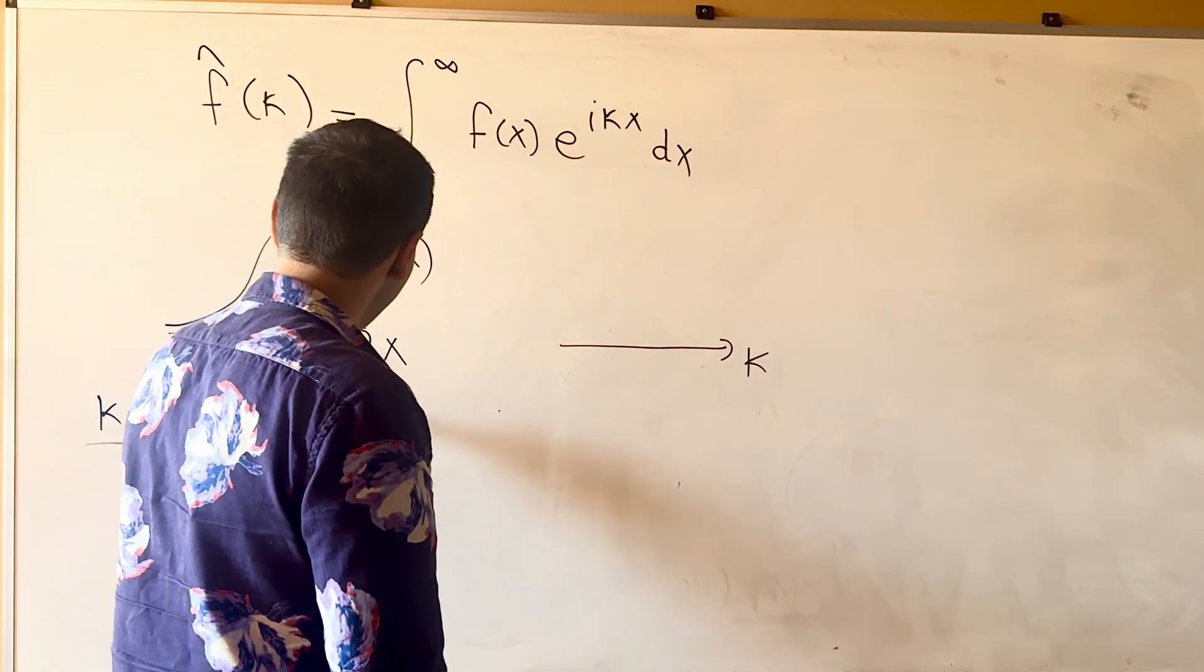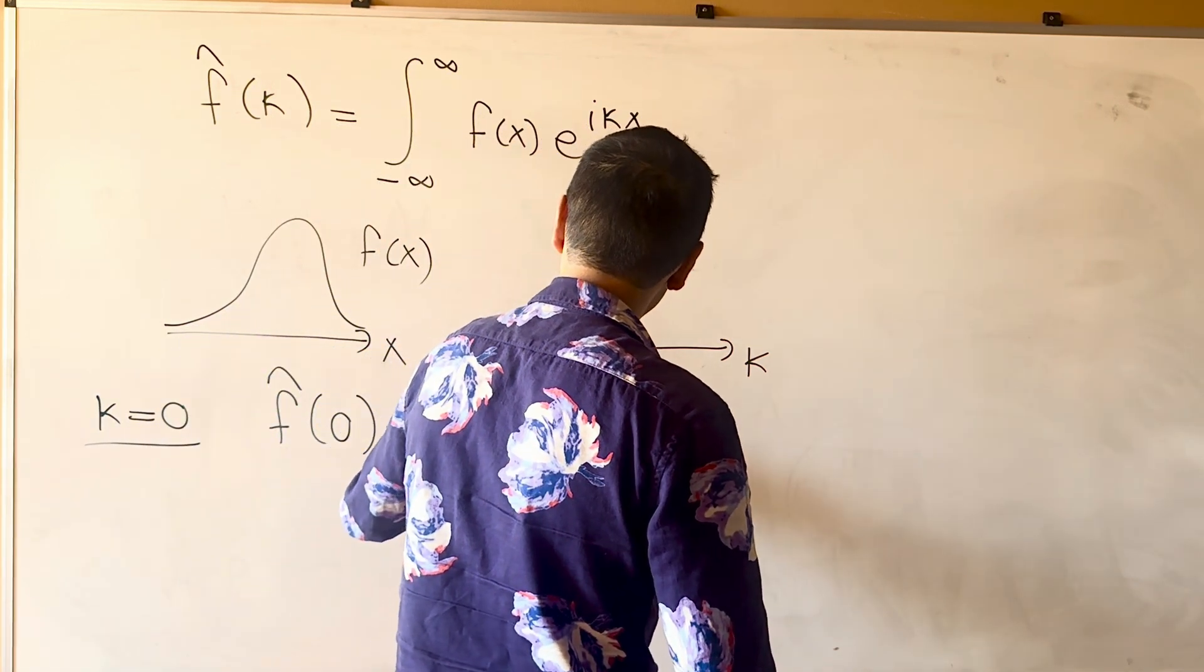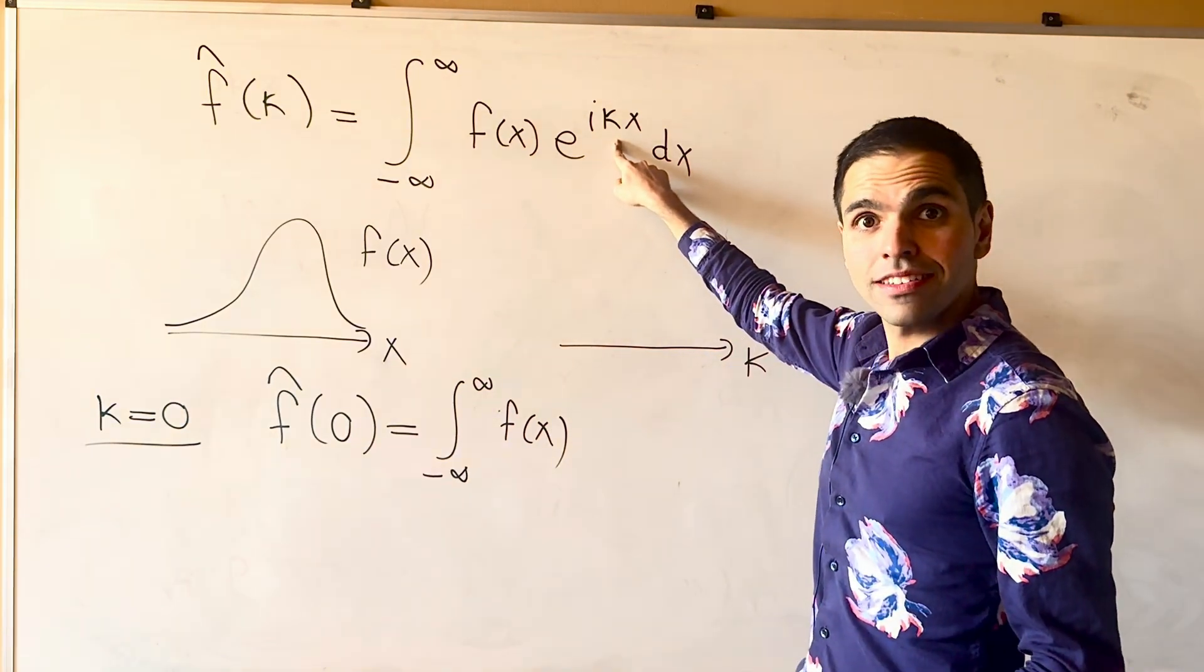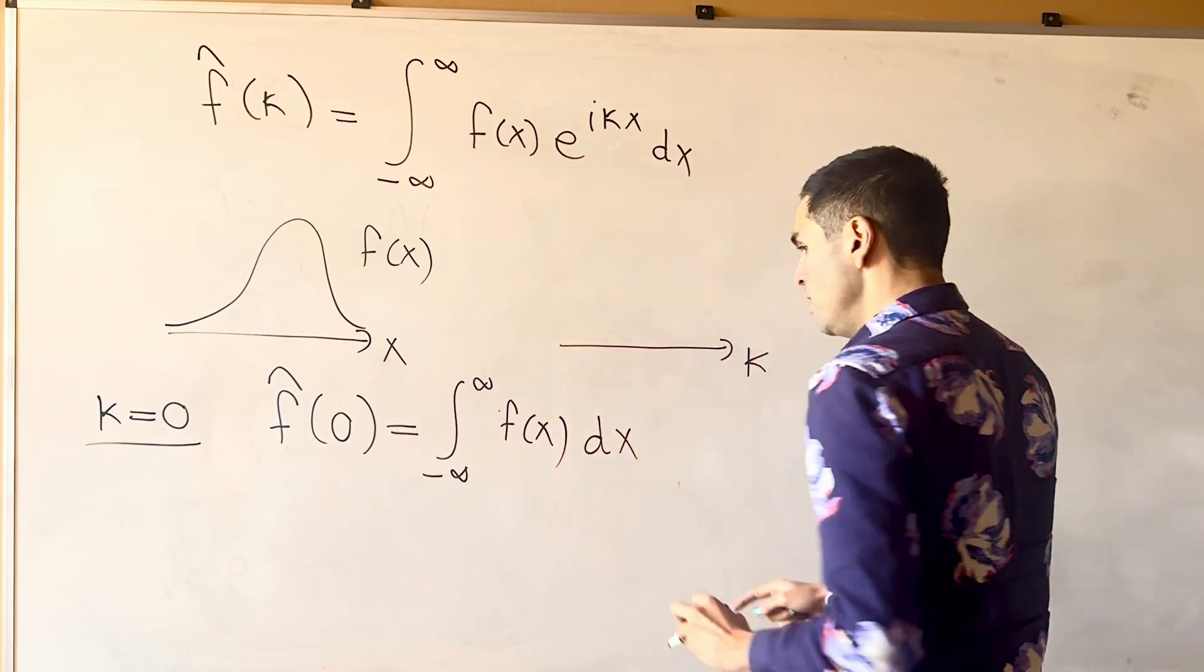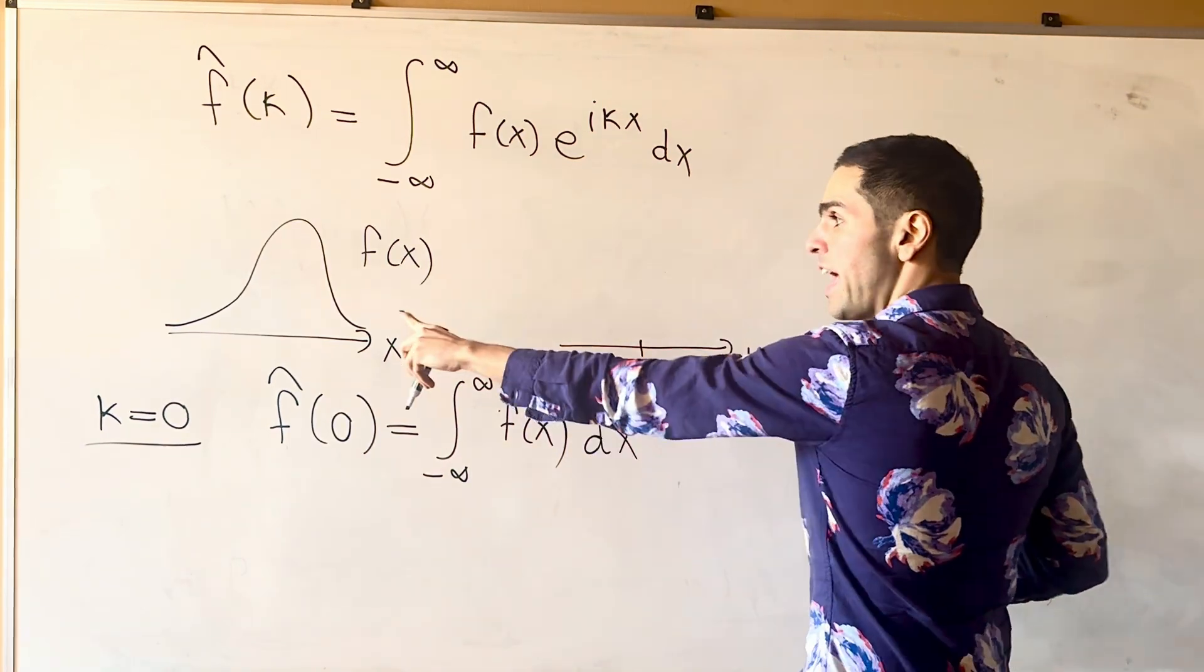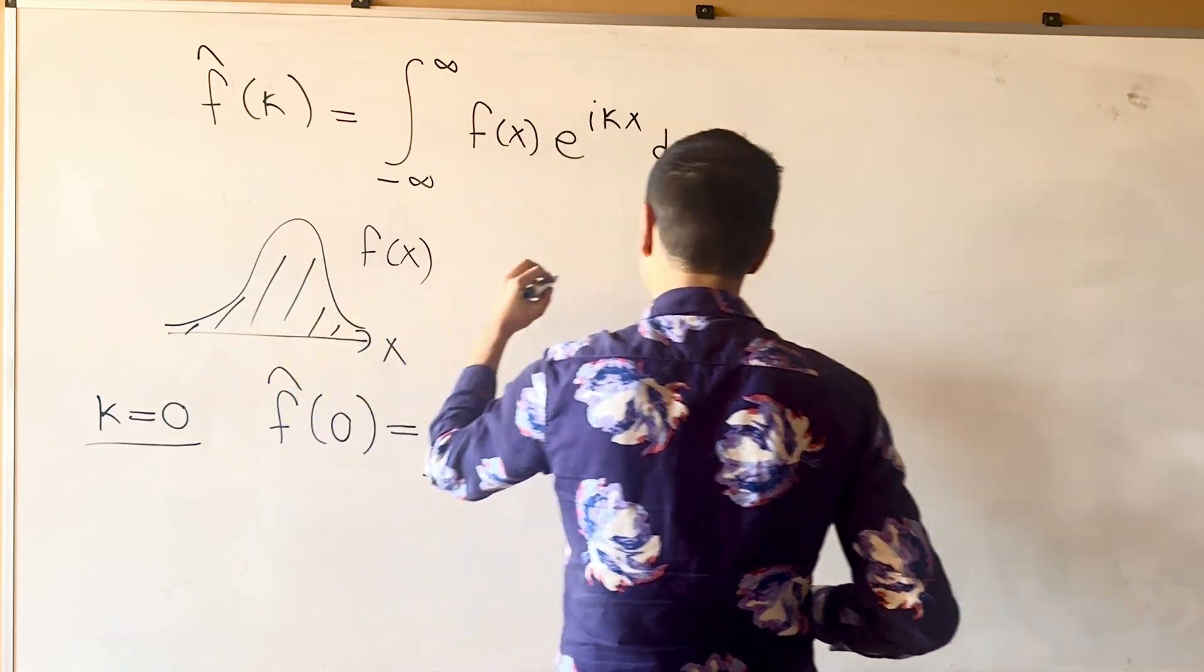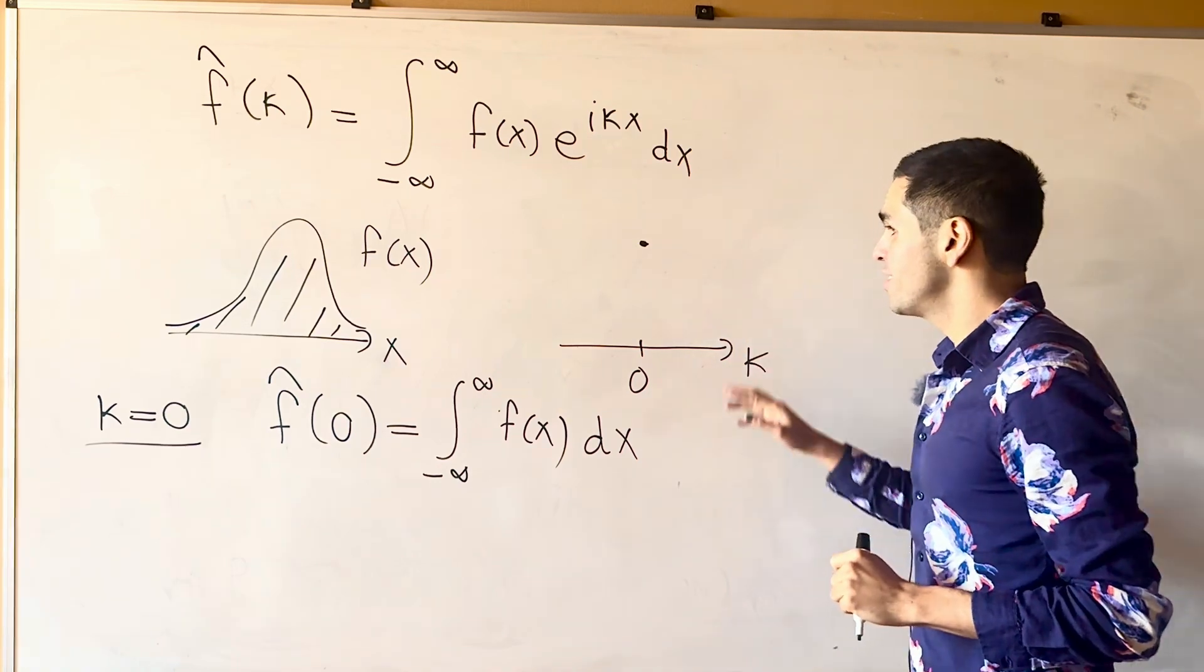So, by definition, f hat of 0 is the integral from minus infinity to infinity of f of x, e to the i 0 x dx, which is just 1. So, for kappa equals 0, we get just the area under your function f, which, if you want, is square root of pi, but that's beside the point.